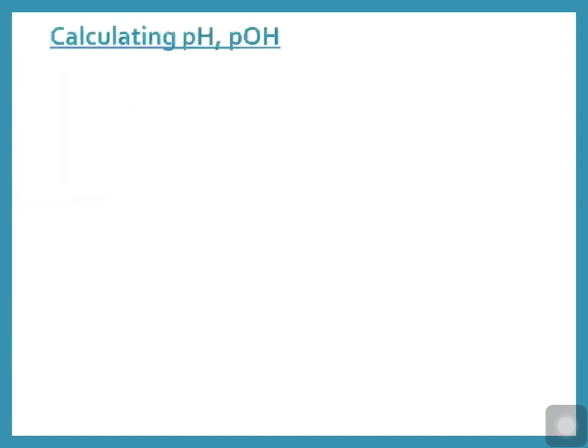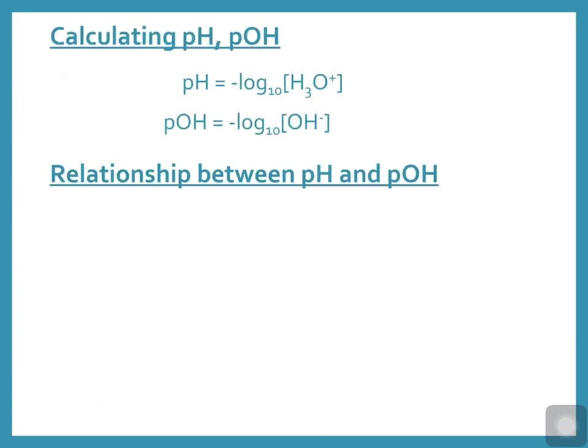pH stands for power of the hydronium ion, and pOH stands for power of the hydroxide ion. pH equals the negative log of the hydronium ion concentration, and pOH equals the negative log of the hydroxide ion concentration.